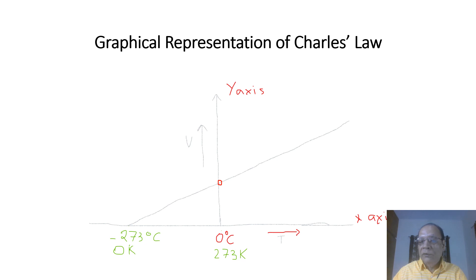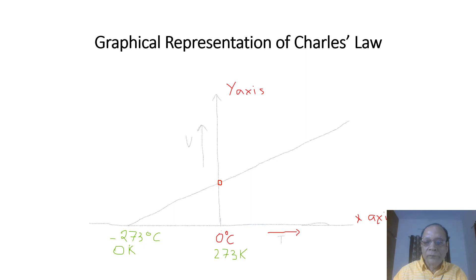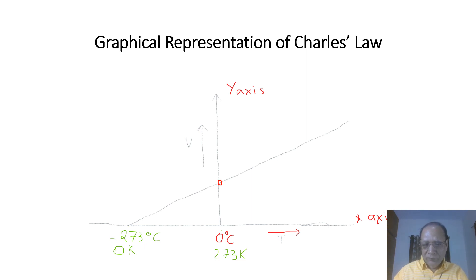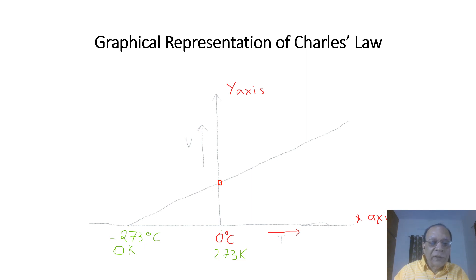V/T always equals k. Now when this line — no matter which gas is taken — is extended backwards, it meets the x-axis 273 steps behind, in the negative region. So no matter which gas we take, when this straight line is prolonged backwards, it meets the x-axis at minus 273 degrees centigrade.